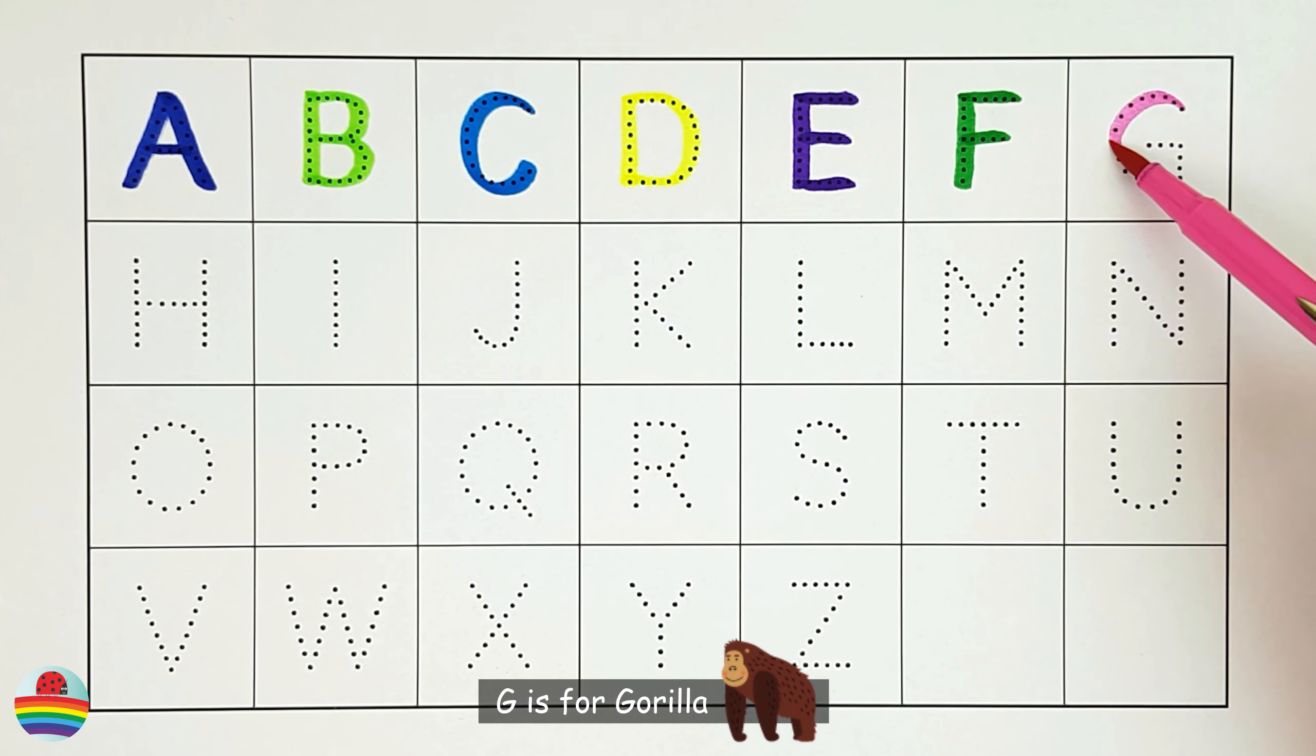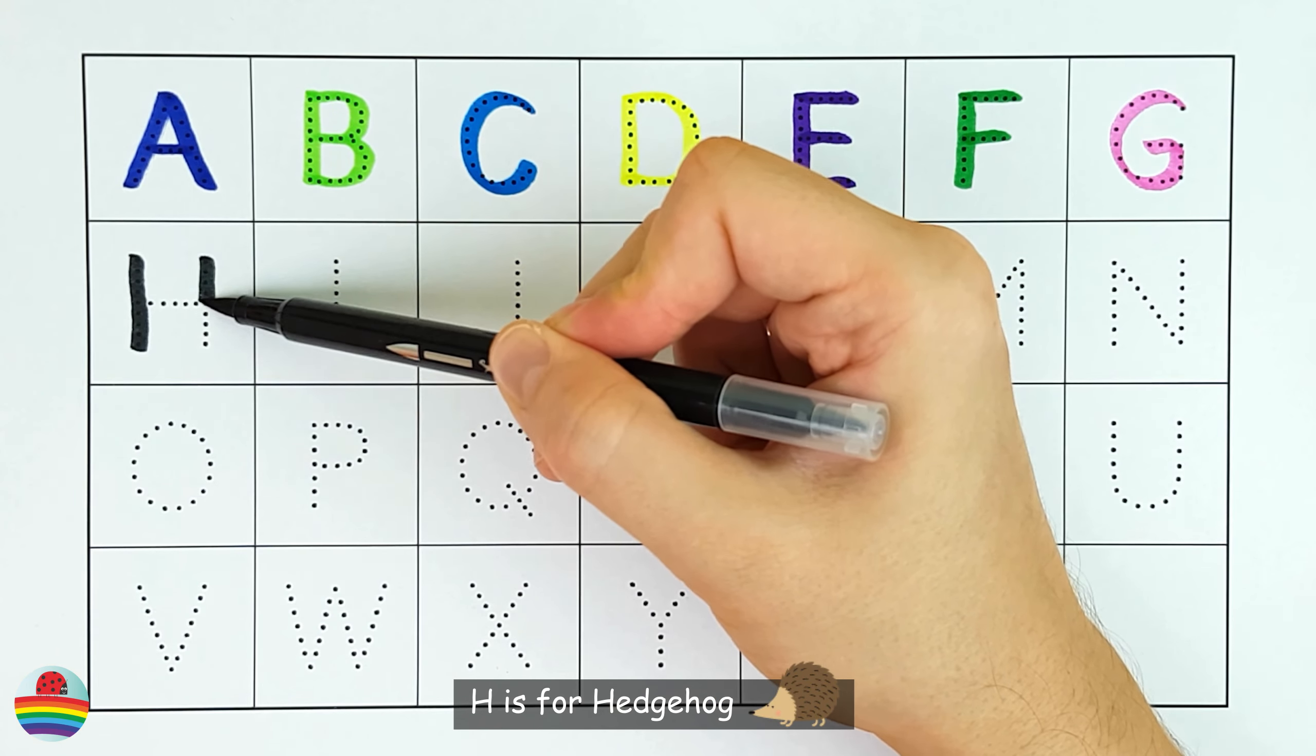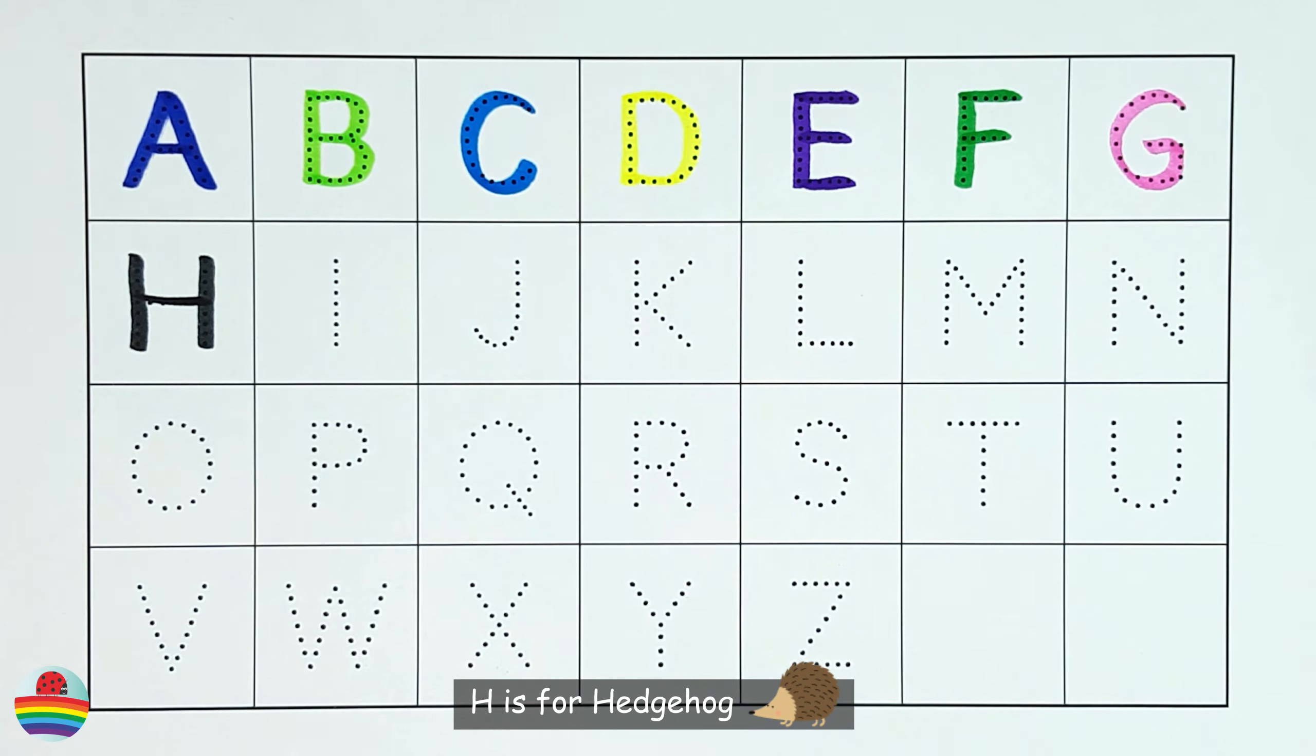G. G is for gorilla. G. H. H is for hedgehog. H.